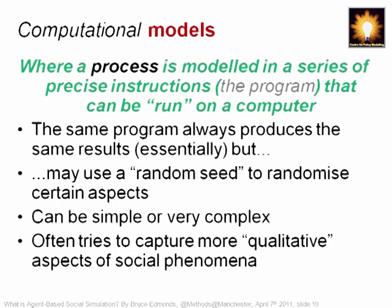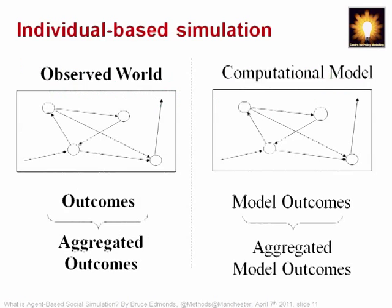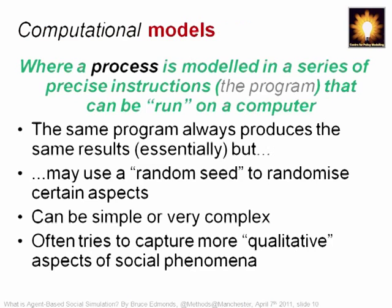A computational model is a formal model — it's a precise thing in a computer, a program. The same program roughly produces the same results, though it may have random bits built in. It can be very simple or complex; basically you have a program and you run it. It doesn't have to be numerical — some AI languages deal with structures interacting with other structures where numbers don't really come into it. In that sense, it's a more general field of possibilities than just the mathematics you might be familiar with.